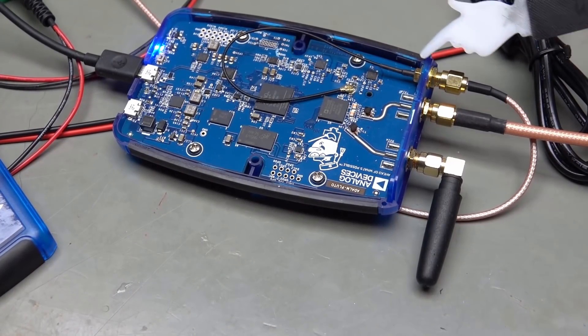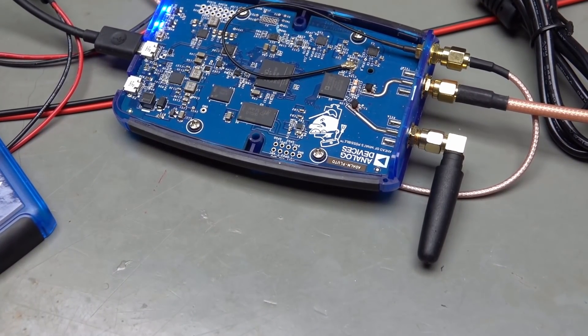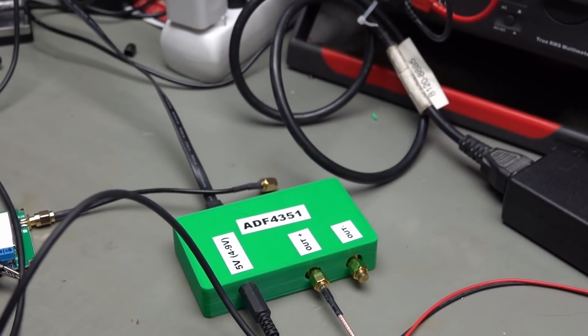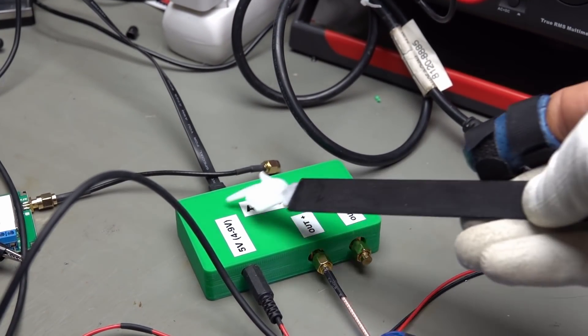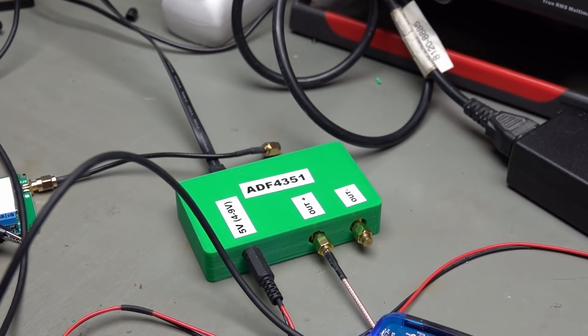I already modified my Pluto for an external reference signal, but I did not get the GPS DO. So, I use this ADF4351 board. So let's check it again when I got my GPS DO.